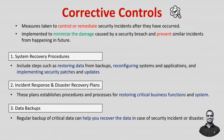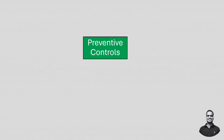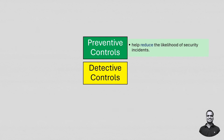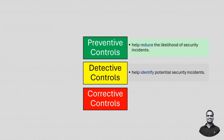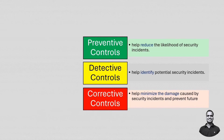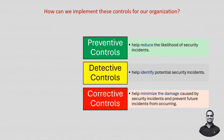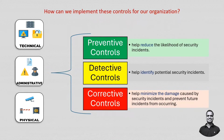All three types of controls are important for a comprehensive security strategy. Preventive controls help reduce the likelihood of security incidents. Detective controls help identify potential security incidents. Corrective controls help minimize damage and prevent future incidents. Implementing these controls requires a combination of technical, administrative, and physical measures.